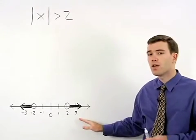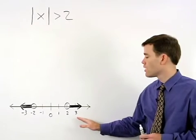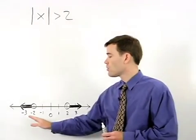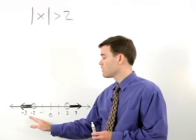On a number line, the points that are greater than 2 units from 0 would be all points greater than 2 or all points less than negative 2.